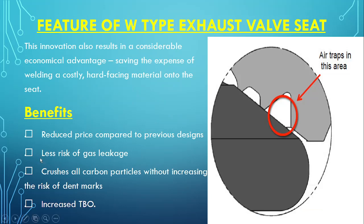In synopsis: a W type exhaust valve seat is a special design of an exhaust valve seat in which the amount of material required for construction is less, and hence it is cost effective. The time between overhauls has been increased. The concentric circles used in the W construction entrap air, providing a cooling effect and reducing the chances of gas leakage due to a three-point contact surface.